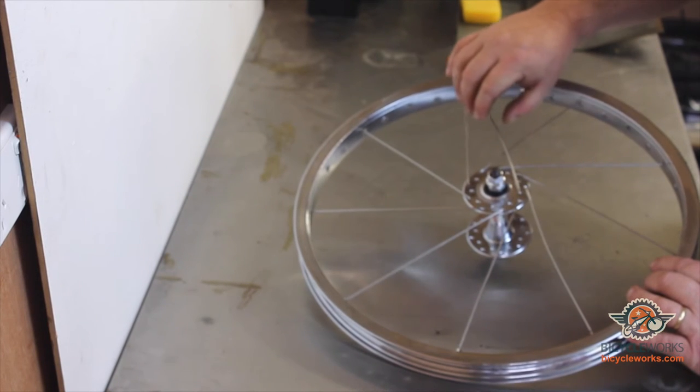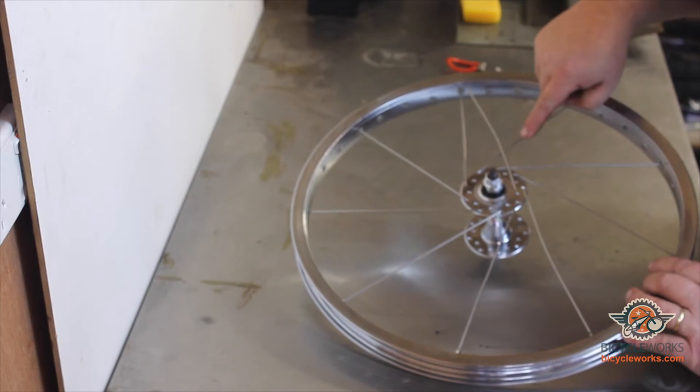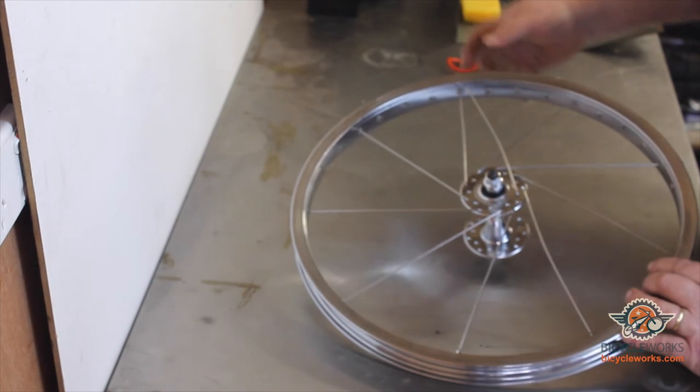Then with the spoke you've just put back through, you need to go over the first two spokes, under the third spoke and into the middle hole.